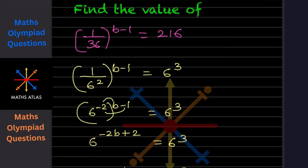So 1 by 36 is 1 by 6 squared. And this will be 6 times 6 times 6, that is 216, which is 6 cubed.